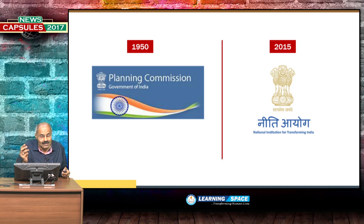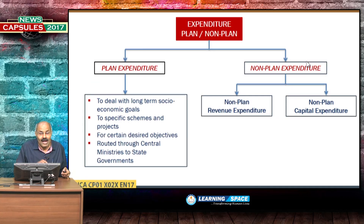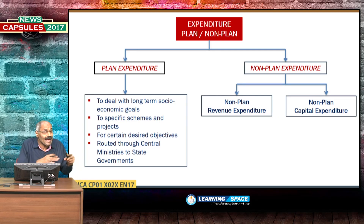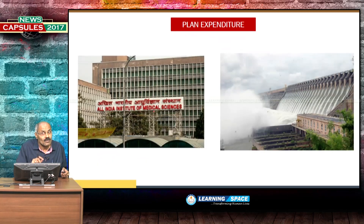Before going ahead, please look into these two organizations. The Planning Commission was established in 1950 and is no more in existence — it has been replaced by NITI Aayog. If you look at plan expenditure, as I have already told you, it is basically to deal with long-term socio-economic goals.